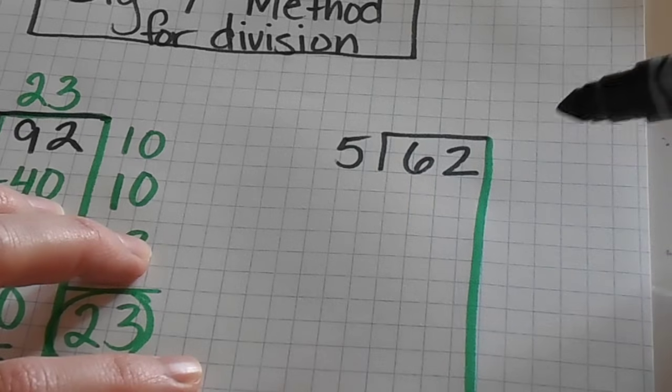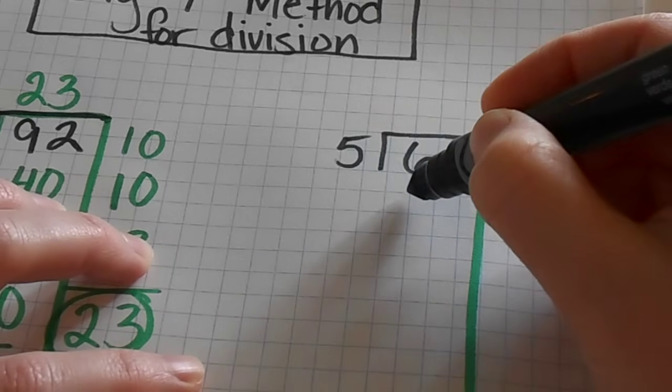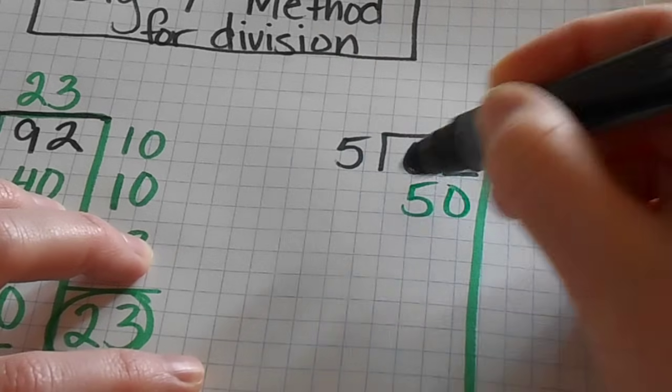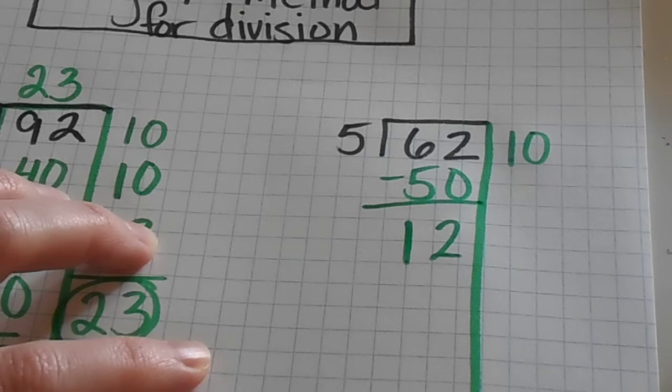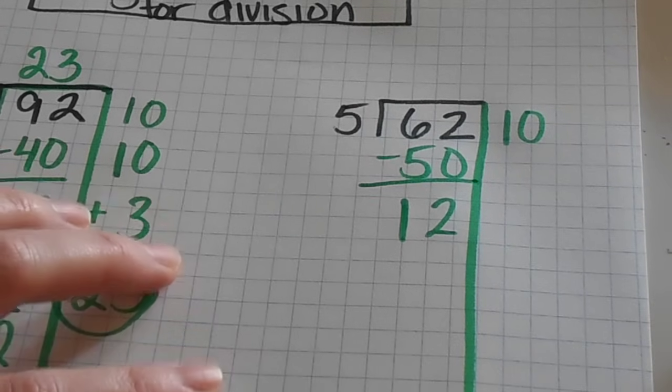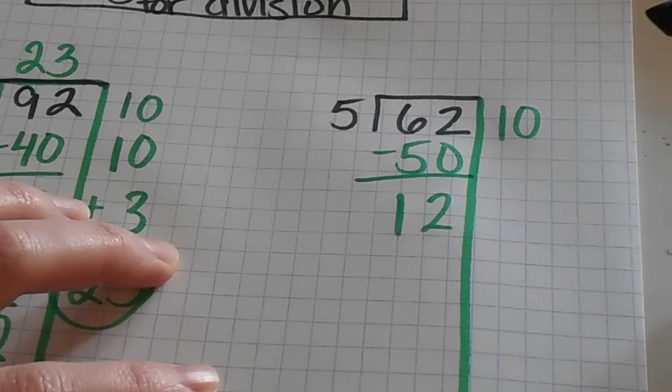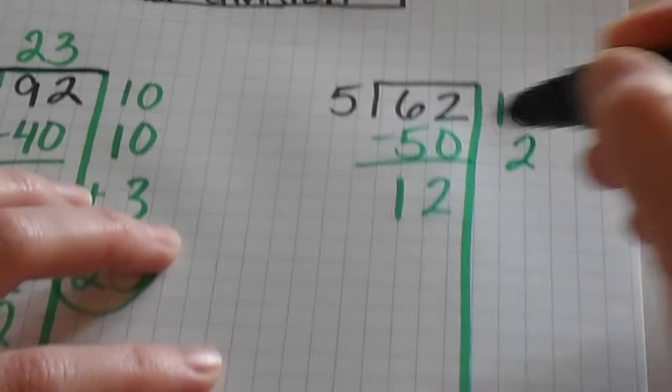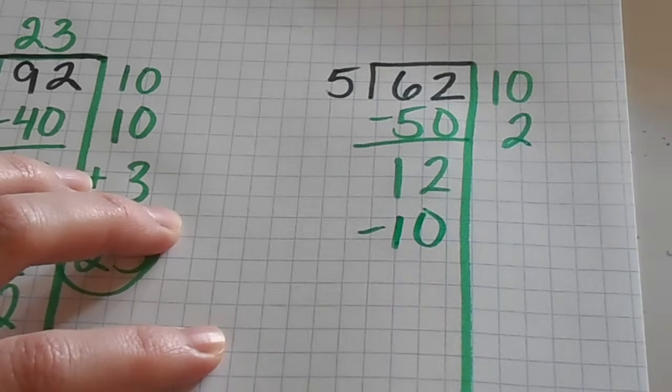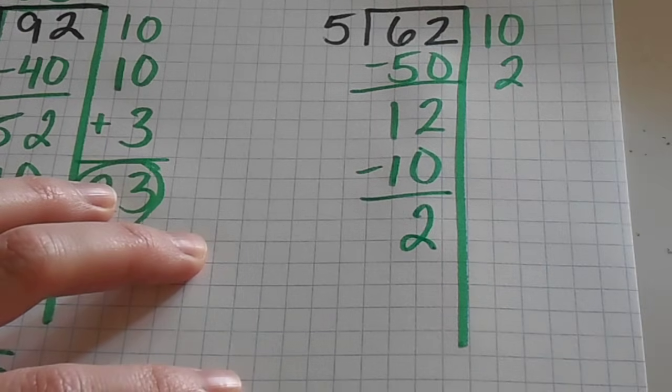And I'm going to use the same method that I did over in the last problem. And I'm going to take out 10 groups of five because I know that's going to be an easy number to take out from 62. And I'm left with 12 when I subtract. So I can't take out another 10 groups of five. So this is where I use my multiples. I know that two groups of five is as close as I'm going to get. And then I have two left over.